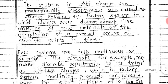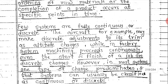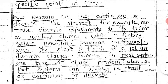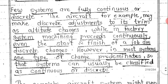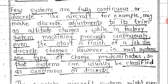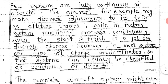There are few systems which are fully continuous or discrete, because sometimes one system can be both continuous and discrete depending on the nature of the activities happening inside it. For example, an aircraft makes discrete adjustments to its steering when the altitude changes, while in a factory system, machining produces continuously.